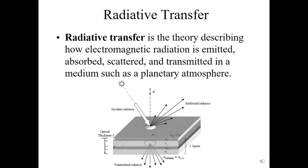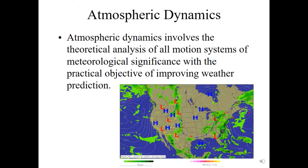Radiative transfer is really trying to understand how electromagnetic radiation is emitted, absorbed, scattered, and transmitted through the atmosphere. And atmospheric dynamics is really trying to understand the motion of the wind, the air, and the weather systems. If you have a good understanding of atmospheric dynamics, it allows you to be able to predict the weather into the future.